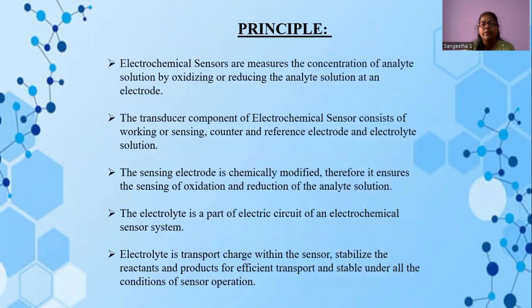Principles of electrochemical sensors. Electrochemical sensors measure the concentration of analyte solution by oxidizing or reducing the analyte solution at an electrode. The transducer component of electrochemical sensors consists of working or sensing, counter and reference electrode and electrolyte solution.